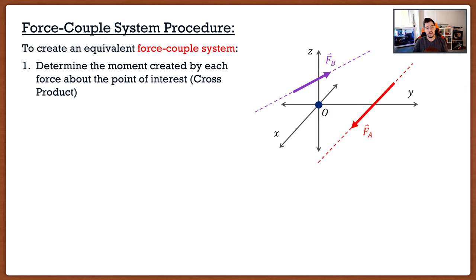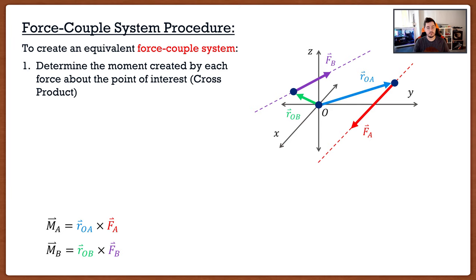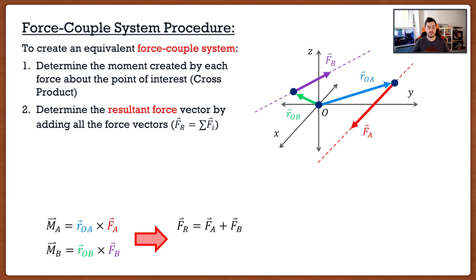First, we need to determine the moment both forces create about point O. For force A, I create a position vector from point O to any location on force A, then cross them together — that gives me the moment about point O from force A. I have to do the exact same thing for force B: create a position vector from O to force B. Remember, the position vector can be at any point along the line of action of the force, then cross them together. This first step is quite tedious because cross products are a time-consuming operation.